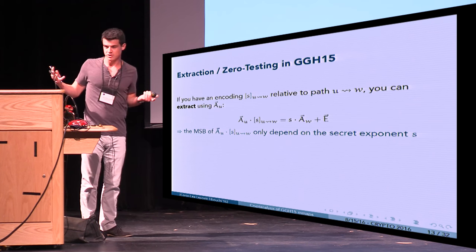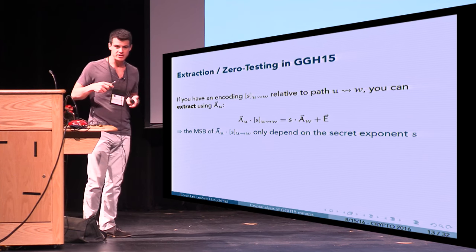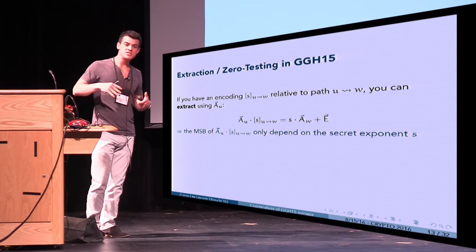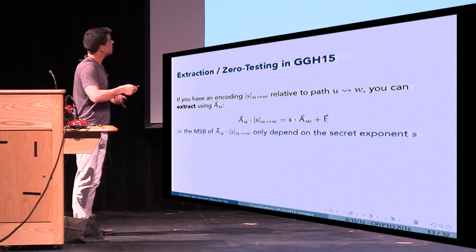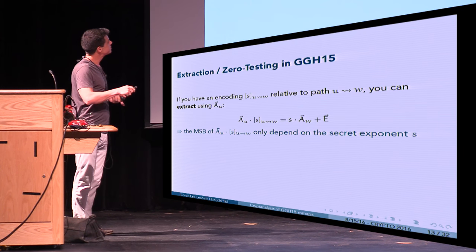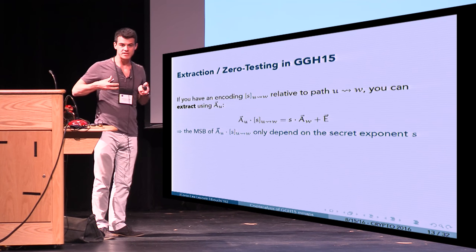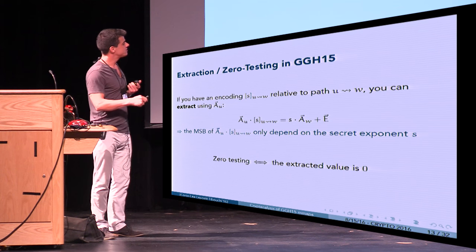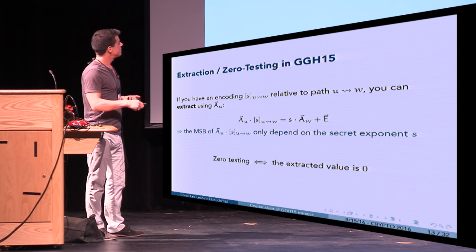For zero testing, there is an extraction procedure: given an encoding of secret s for path u→v, multiplying by vector a_u gives s times a_w plus a small error e. Since e is small, the most significant bits depend only on s. If s is zero, the result is small, confirming the encoded value is zero. Two different encodings of the same value will yield the same most significant bits, allowing key extraction depending only on s.